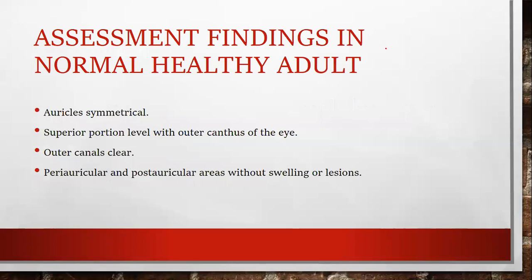For a normal healthy adult, the assessment findings on inspection of the ear include: the auricles will be symmetrical in shape, and the superior portion of the auricle aligns with the outer canthus of the eye. The outer ear canals can be seen clearly. The periauricular and post-auricular areas are without swelling or lesions. Normally, if the patient does not have any infection, all parts will have normal characteristics.